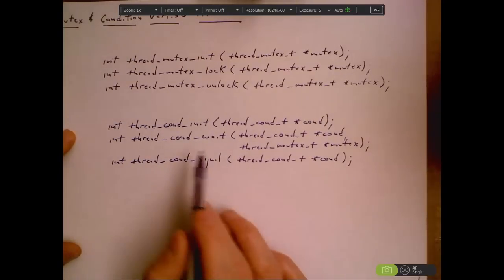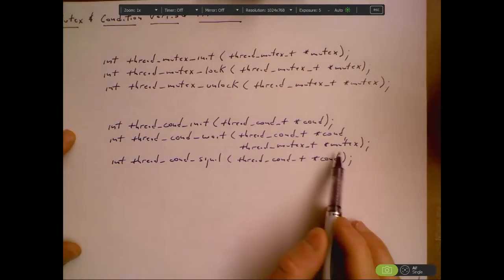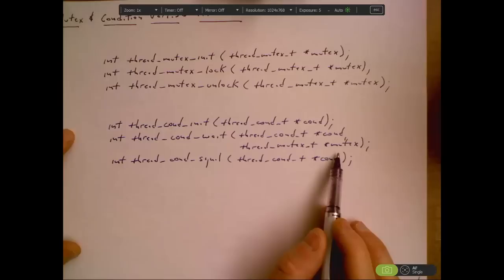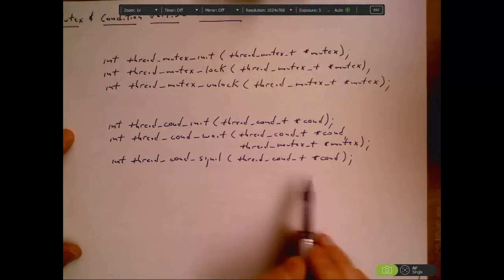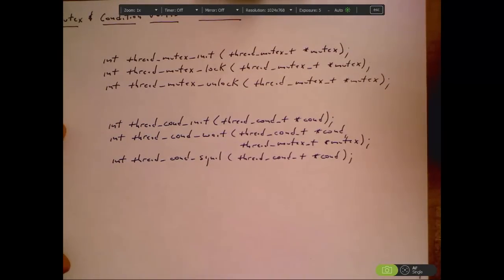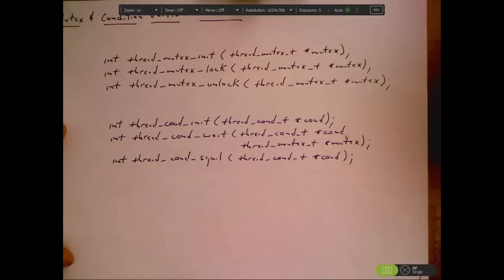I can unlock them, and condition variables I can do wait which takes a condition variable and a mutex. Usual assumptions here that the caller has locked the mutex in advance and then signal which takes a condition variable. So very simple interface here.